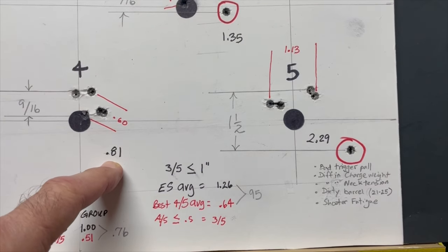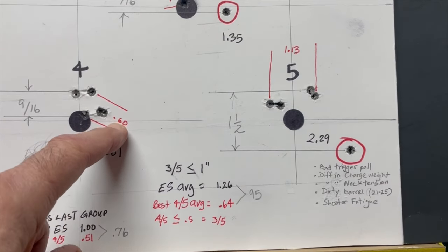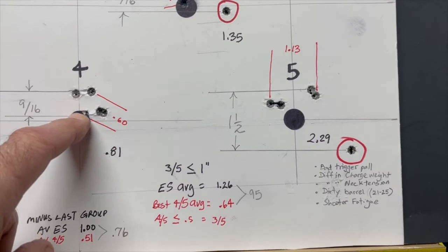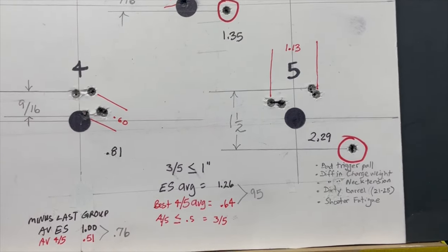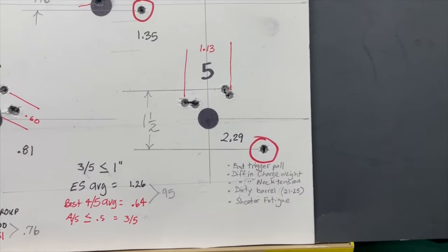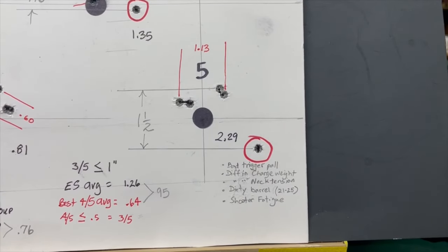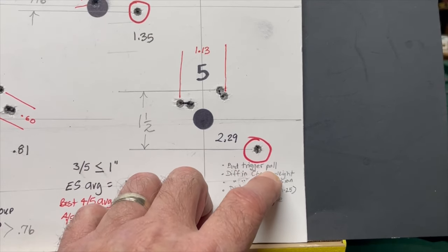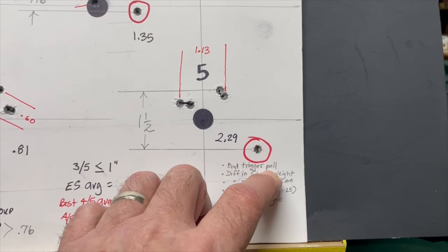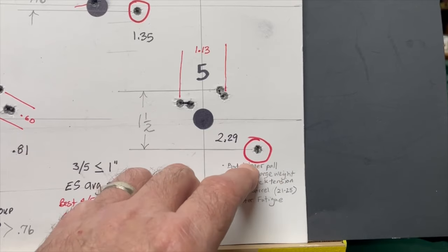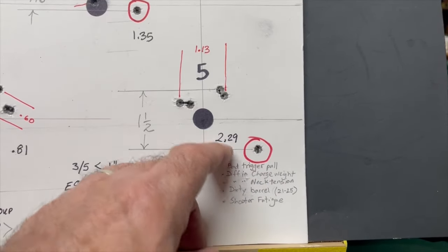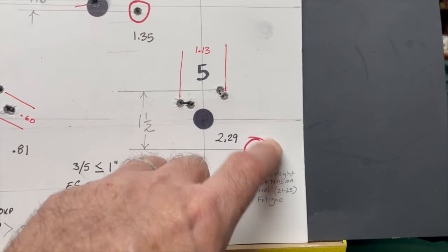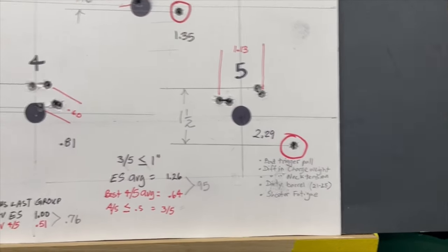When we come down to groups number four and five, on four we have a 0.81 extreme spread and a 0.60 best four out of five. So that's pretty decent. And then over here on group number five, we were really scattered here. But most likely I would say it was probably just a bad trigger pull, maybe on my part, because they were all loaded with the AutoCharge Pro. So I'm not thinking there was any difference in the consistency.